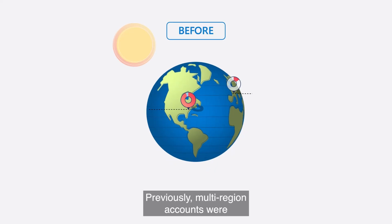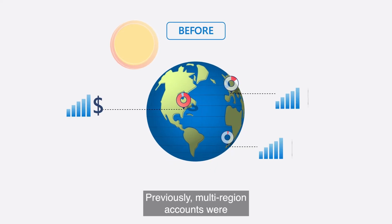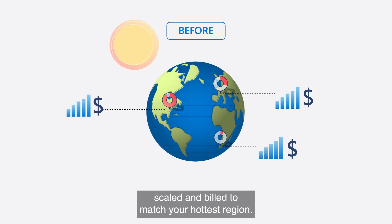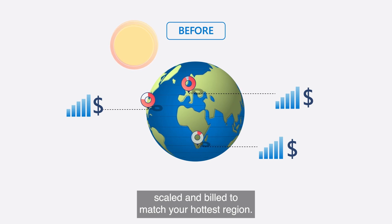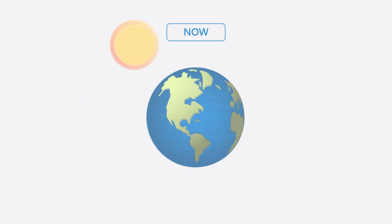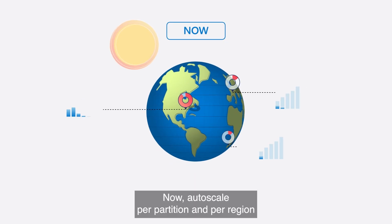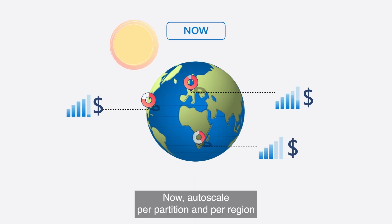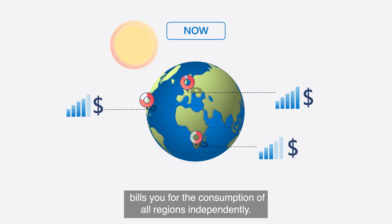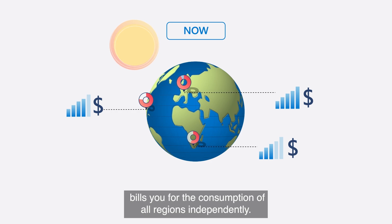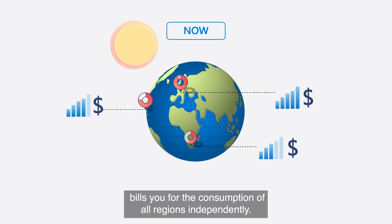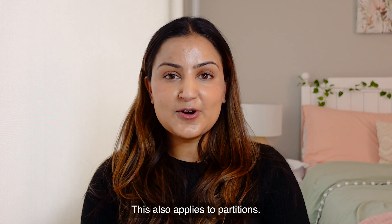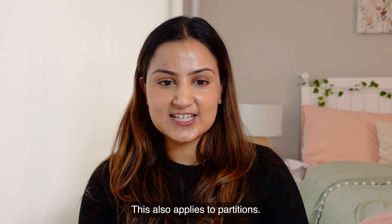Previously, multi-region accounts were billed based on your hottest region. Now, Autoscale per partition and per region bills you for the consumption of all regions independently. This also applies to partitions.